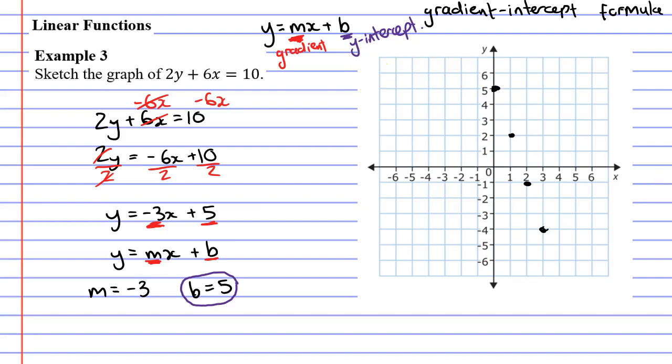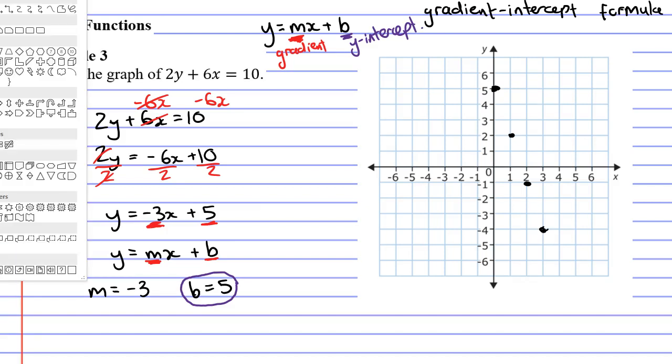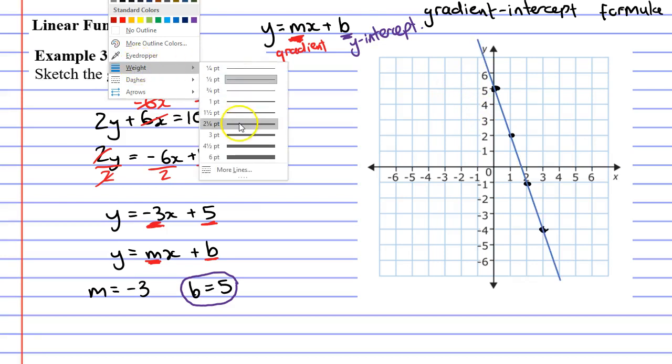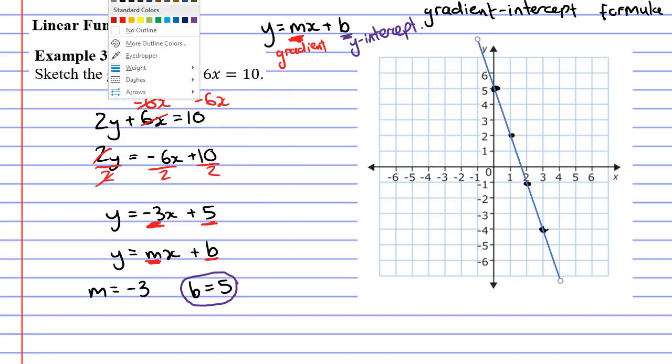Okay, we can now draw our graph with a line. You want your line to pass through all your points, like so. And you also want your line to have arrows at both ends. The reason we put arrows in is to show that the line can go on forever in both directions.